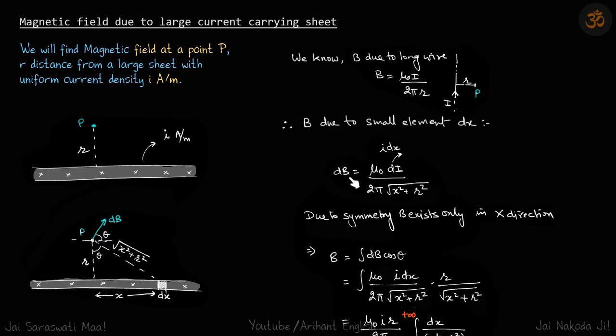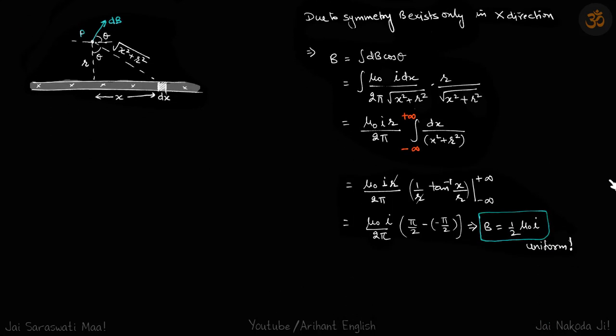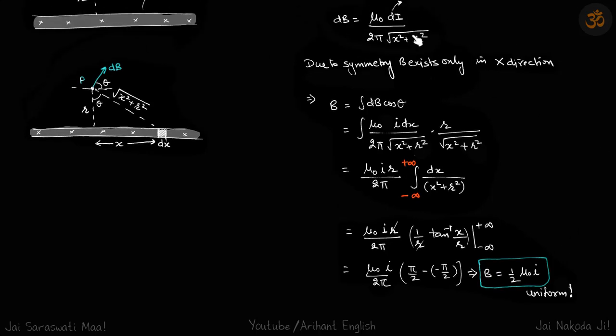Now we can write B as equal to the integral of dB cos theta. We are only taking it in the x direction, so it is dB cos theta. We can put the values of cos theta here: cos theta is R over root x squared plus R squared. And we put dB from here.